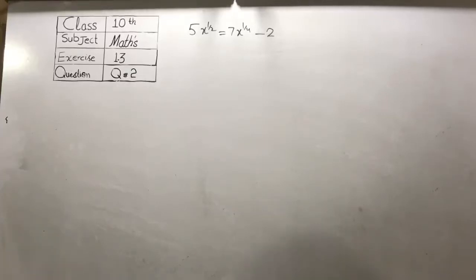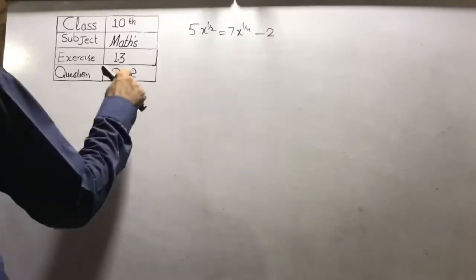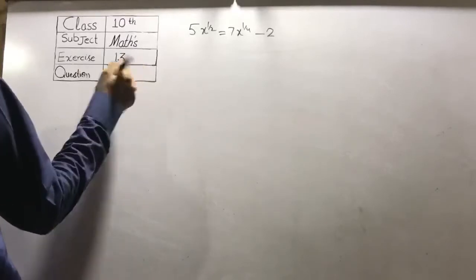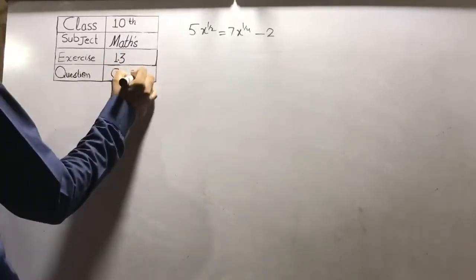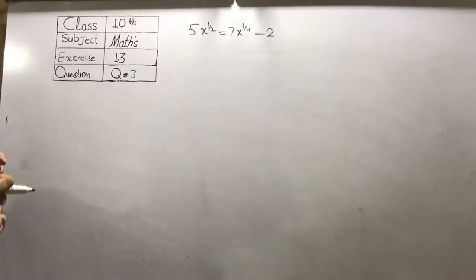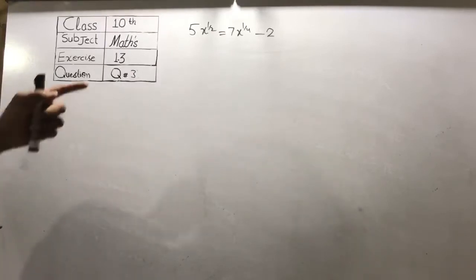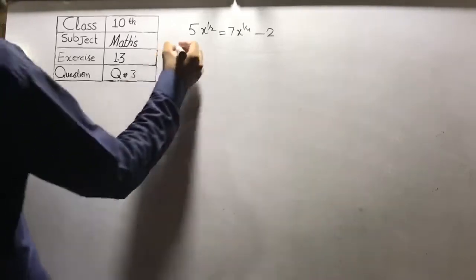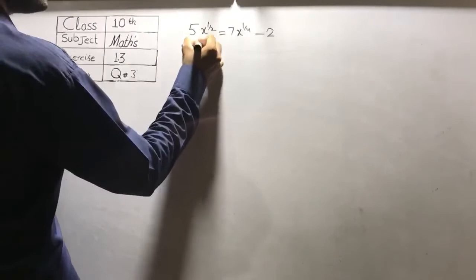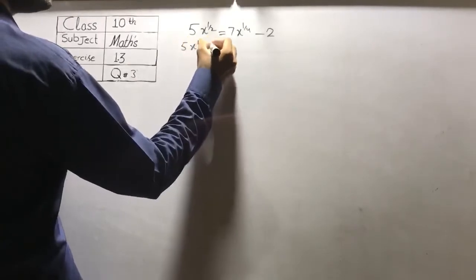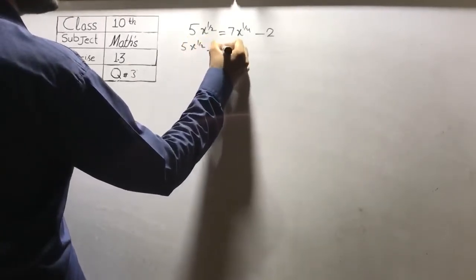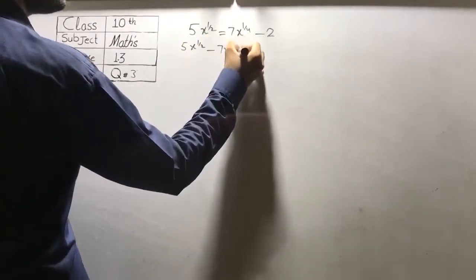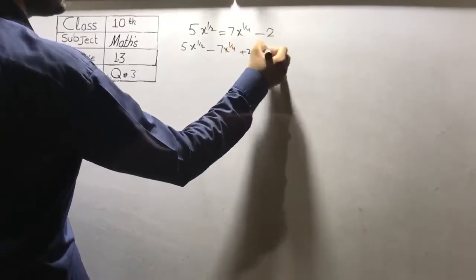Question number 3 is: 5x raised to power 1 over 2 is equal to 7x raised to power 1 over 4 minus 2. It is not in standard form, so first of all we convert it into standard form: 5x raised to power 1 over 2 minus 7x raised to power 1 over 4 plus 2 is equal to 0.